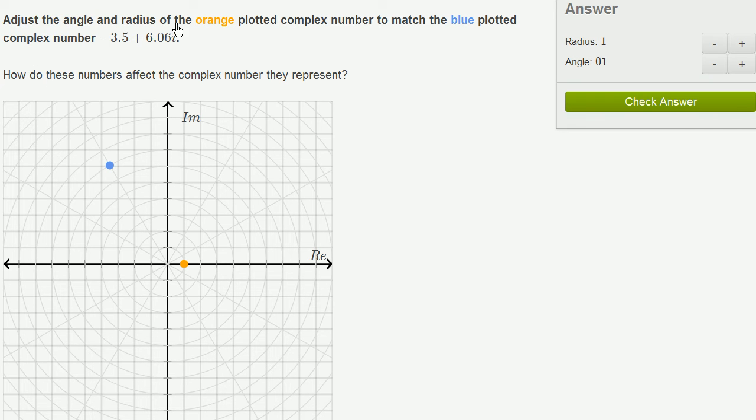We're asked to adjust the angle and radius of the orange plotted complex number to match the blue plotted complex number, negative 3.5 plus 6.06i. So this is this one right over here.